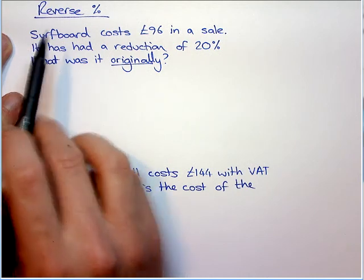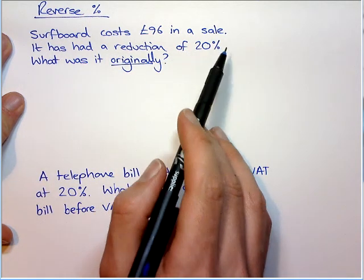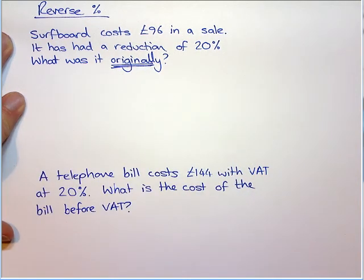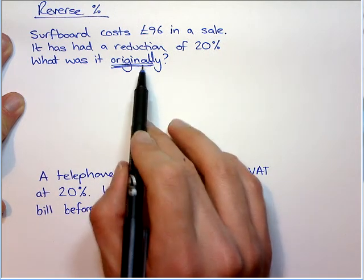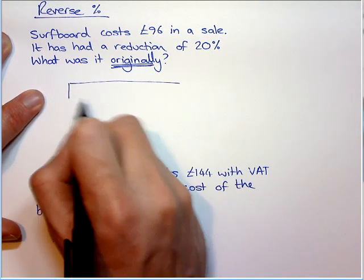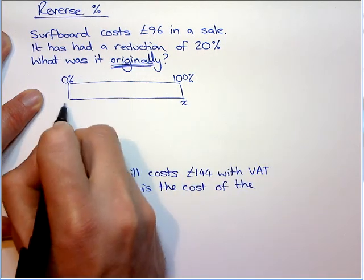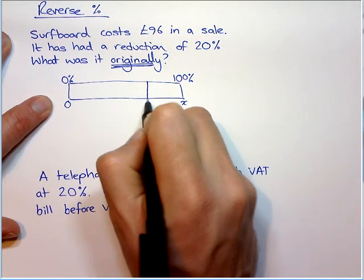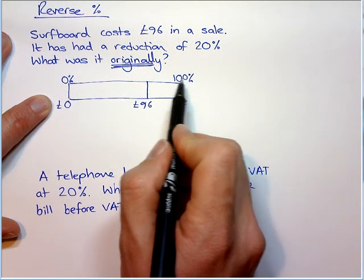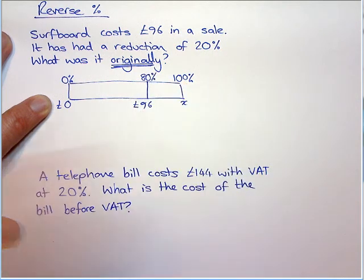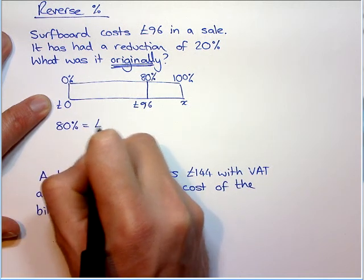So let's have a look at this question. A surfboard costs £96 in a sale. It has had a reduction of 20% — what was it originally? There is the key word. It doesn't have to say 'what was the original price'; it could say 'what was the price before the sale', but you have to detect it. 100% of the price we don't know, so I'm going to call that X. We know that £96 is the price after a 20% reduction, so if we take off 20%, it is actually worth 80%. The fact we are given to write down is: 80% is £96.